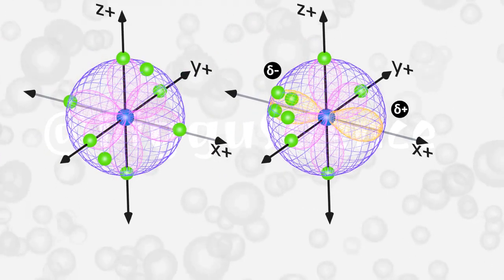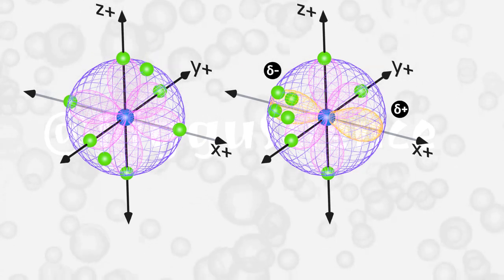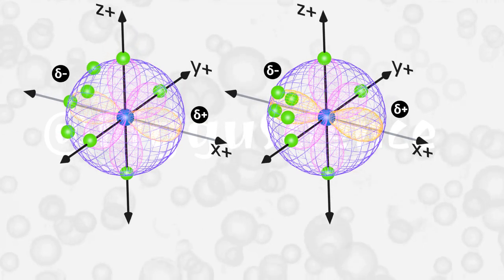Imagine that around this neon atom there is another neon atom that does not have a dipole. Electrons that are close together will move away from each other. Because the number of electrons in the neon with a momentary dipole is greater, the electrons in the neon that do not have a dipole will move to the left side.